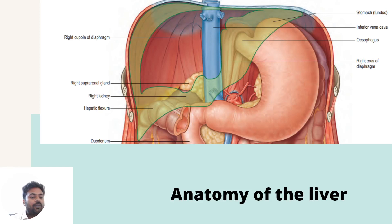Good afternoon. Today we will discuss about anatomy of the liver. Liver is the largest organ in our body. It performs both exocrine and endocrine functions.